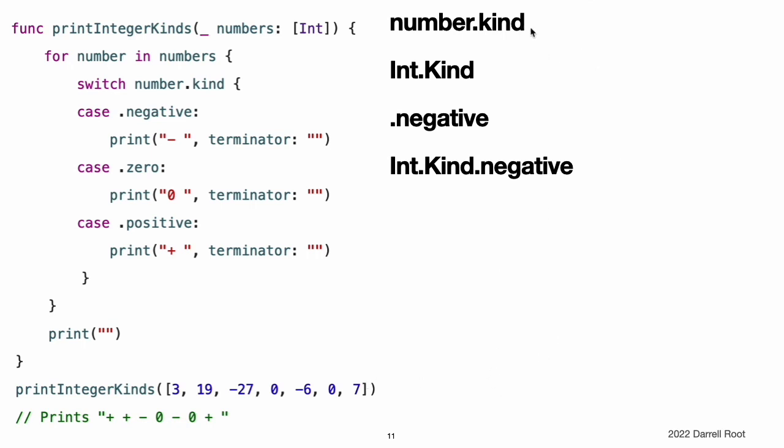Note, number.kind is already known to be of type int.kind. Because of this, all of the int.kind case values can be written in shorthand form inside the switch statement, such as .negative, rather than int.kind.negative.